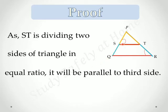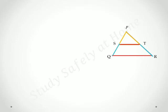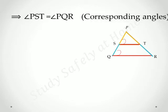It will be parallel to third side. Why? Because of converse of BPT. It implies that angle PST is equal to angle PQR. Why? Corresponding angles.